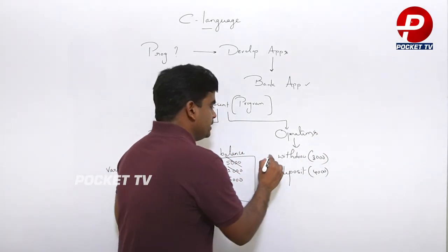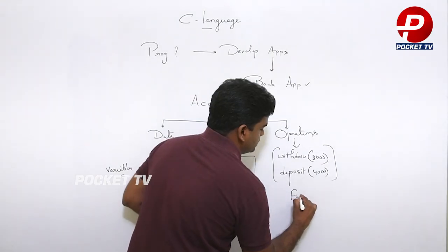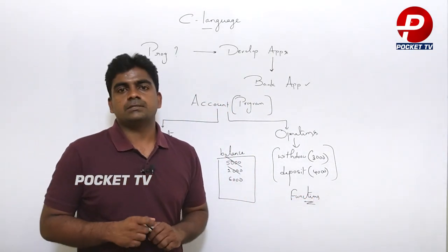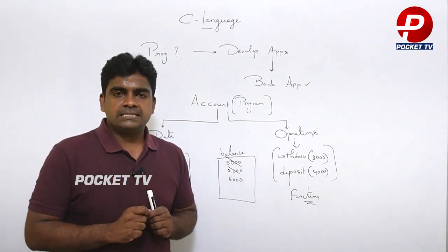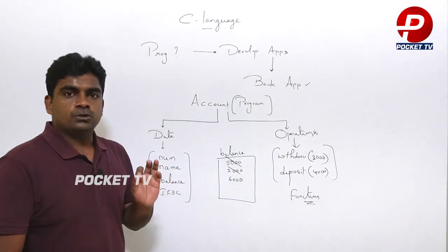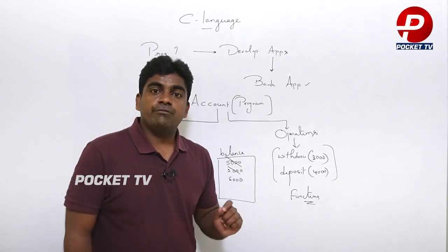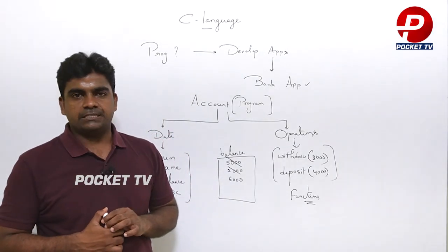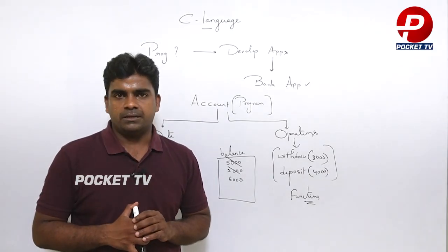Technically, operations are called functions. So every program consists of two things: first, variables to store the information; second, functions to perform operations on information. This is the simple introduction to C programming.